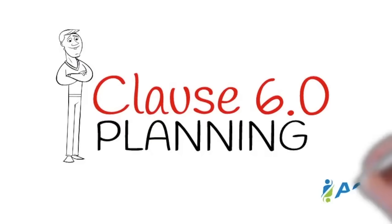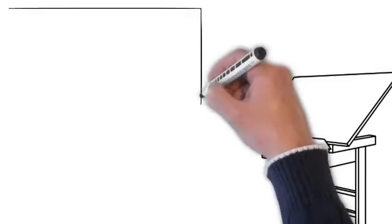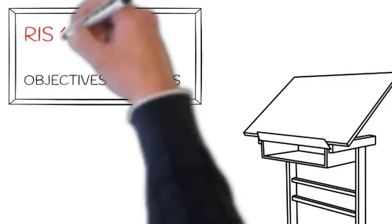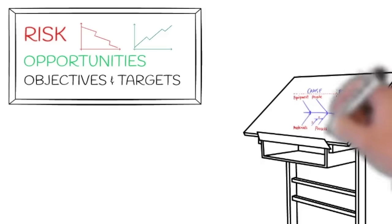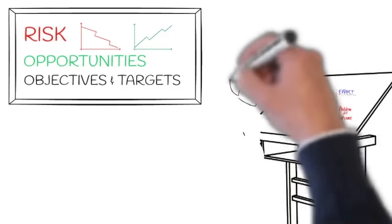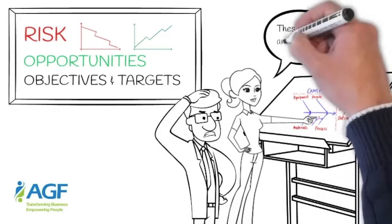Clause 6 will guide us on how to effectively plan our actions to address risk and opportunities. These, by the way, are one of the highlights of the new ISO 9001. Quality objectives should also be defined, and most importantly, come up with a clear cut plan on how to achieve them. Changes in these objectives and actions should also be carefully included in the planning.